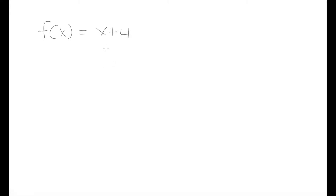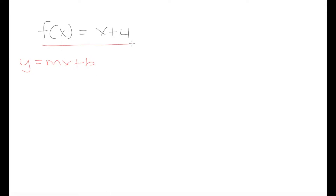The first thing we want to do when given a function like this is to find out a few key pieces of information. We should first determine our y-intercept. Linear functions come in the general form y equals mx plus b, where m is the slope and b is the y-intercept. So looking at this function, our y-intercept is 4 and our slope m is 1 — it's the same as 1x plus 4.